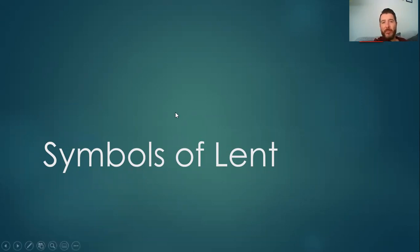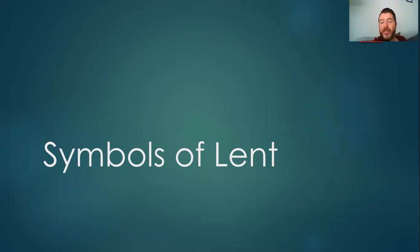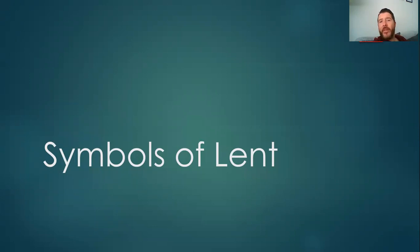Today we're going to be looking at some of the symbols of Lent and you're going to be doing some work where you'll be drawing your own symbols. If you choose the easier sheet, you're going to be cutting out and sticking the explanations of what they remind us of in the right place and drawing the pictures. And if you're doing the trickiest sheet — which I recommend most of you do if possible — you're going to be choosing five of the symbols of Lent, telling me what their name is in the next box, and writing what they remind us of.